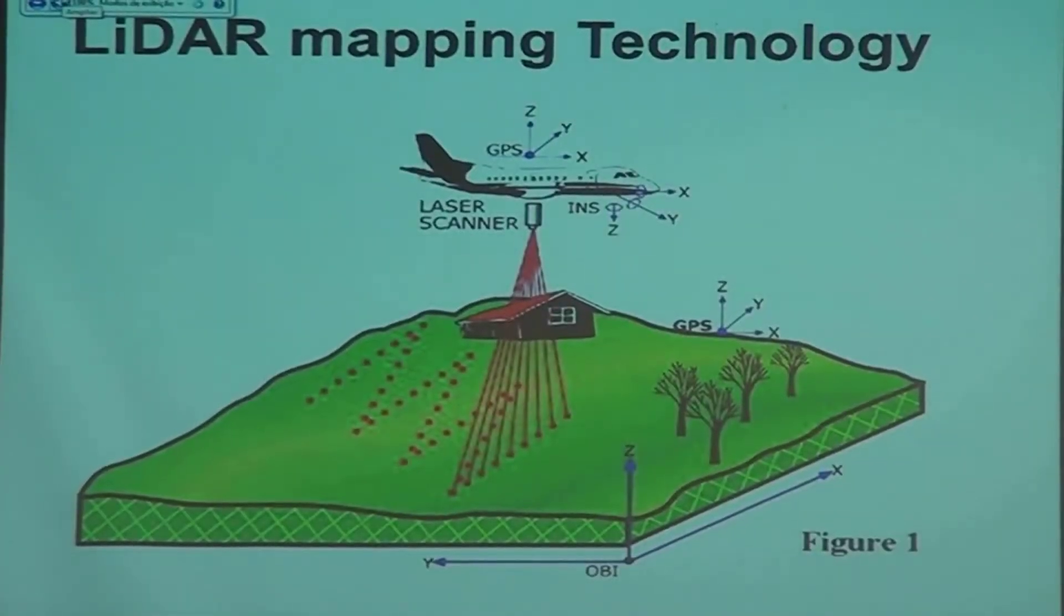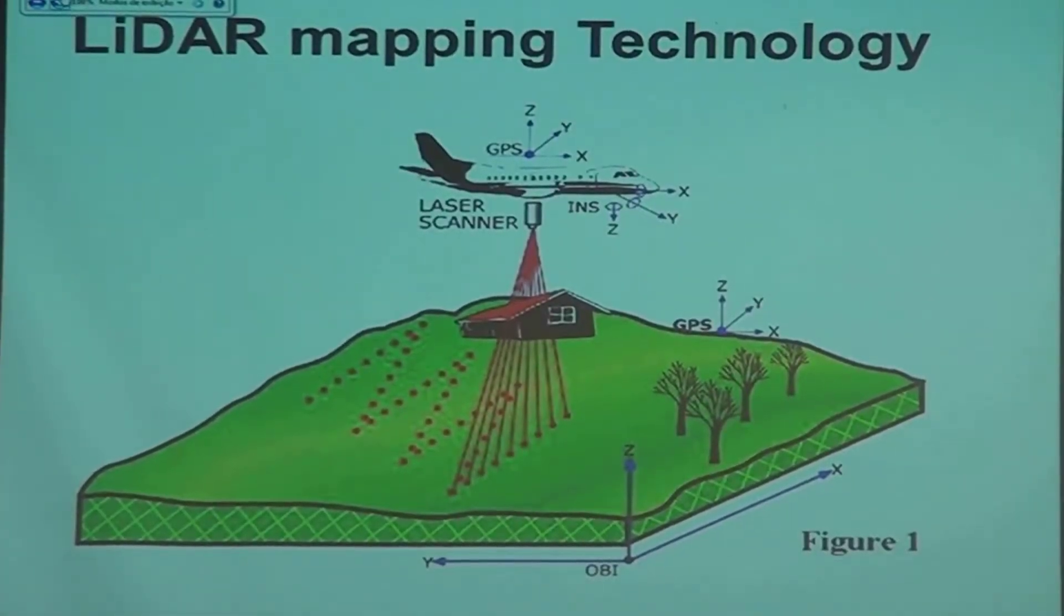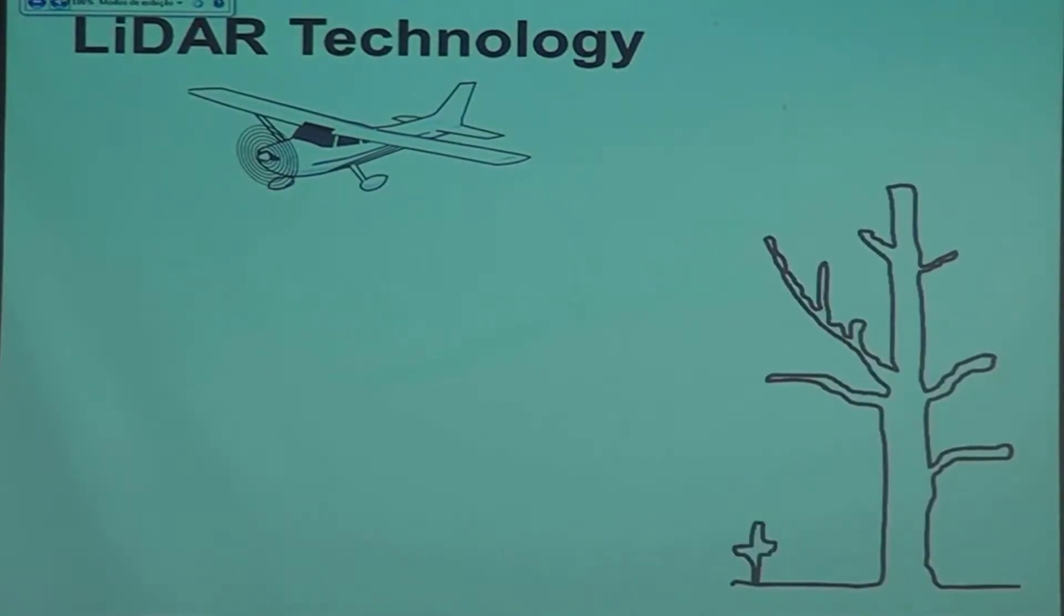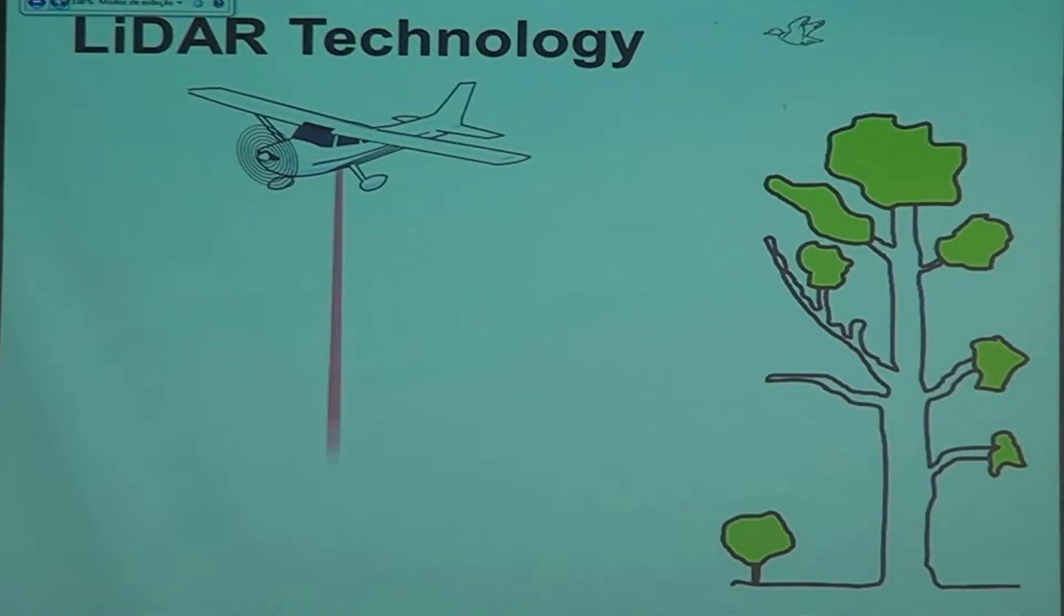So most people know that's how the LiDAR plane operates. You have the laser on the plane. You've seen slides like this many times. But what exactly happens? You have the plane, you have, in our case, a tree, maybe a bird, and then that LiDAR shoots.